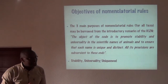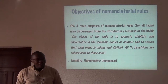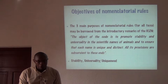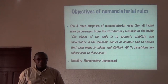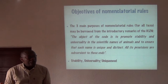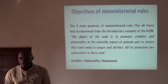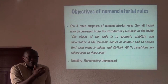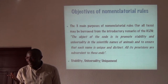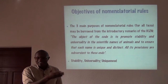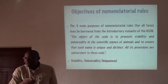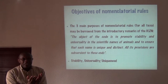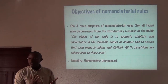Stability simply means that the name of an organism should be changed as little as possible. Ideally it should not be changed, but there are cases where we are compelled, for the sake of avoiding confusion, to change some. Universality means that the same organism should be known everywhere in the world by the same name. If we surveyed this room for the name of a dog in each language spoken, we would end up with as many names as there are people, so there is a need for a uniting name shared among all scientists.